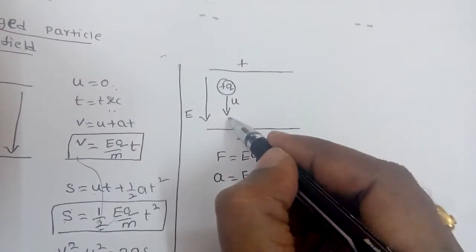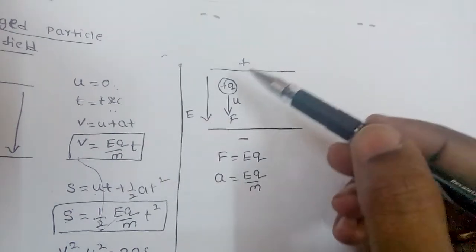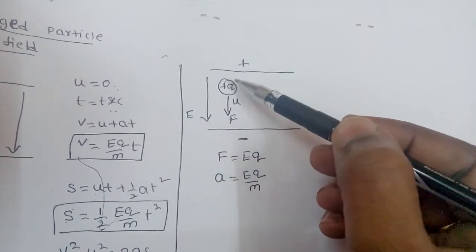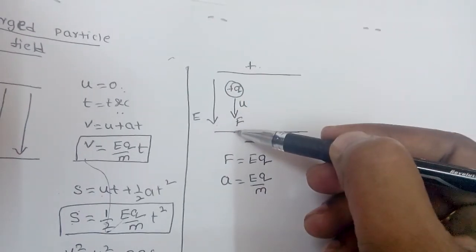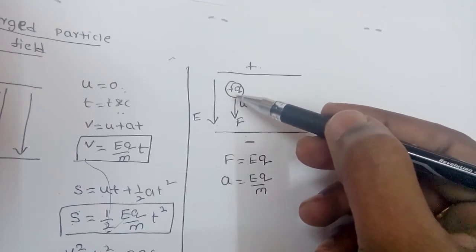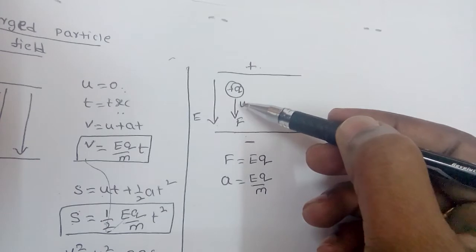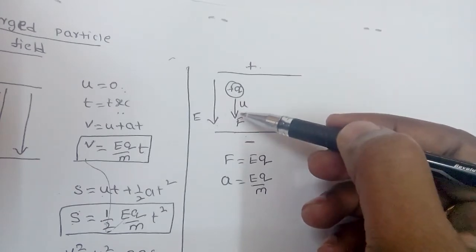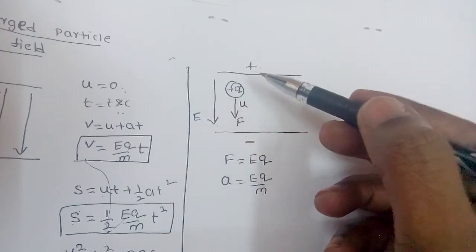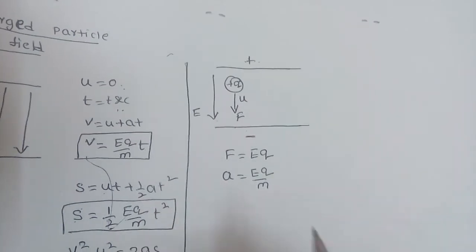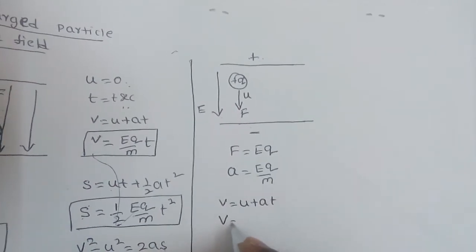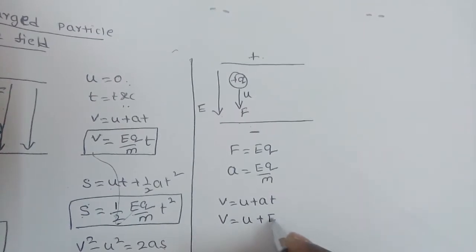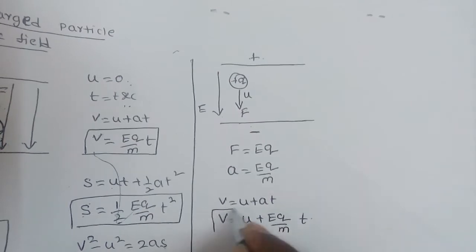This force acts in the direction of the initial velocity because the positive plate applies repulsion and the negative plate applies attraction, both acting toward the negative plate. So the charged particle experiences force in the direction of the field, and since it already has velocity in that direction, its velocity gradually increases. Using the first equation of motion, V = U + at, we get V = U + (Eq/m) × t.